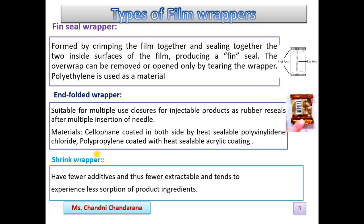Now the shrink wrapper: this concept involves packaging a product in a thermoplastic film that has been stretched and oriented during its manufacture and has the property of reverting back when heated. It has few additives, thus few extractables, and tends to experience less absorption of the product ingredients — this is the advantage. The material mainly used is polyvinyl chloride (PVC).